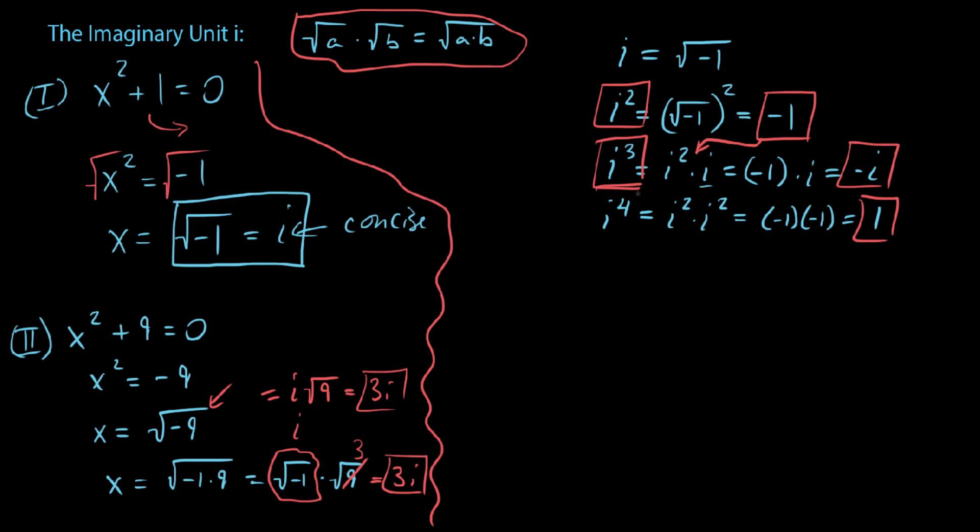So these are the four we want to memorize. And I say memorize like i. We usually just say i. Well, that's just i. i squared, wherever we see that, we can substitute negative 1. i cubed is always negative i. And then i to the fourth is 1. Now you might be saying, why do I only need to memorize these four? Doesn't this pattern continue?